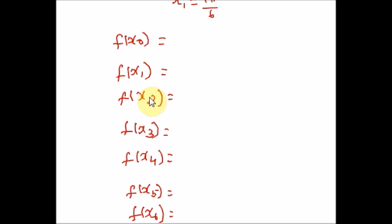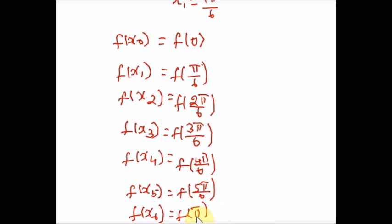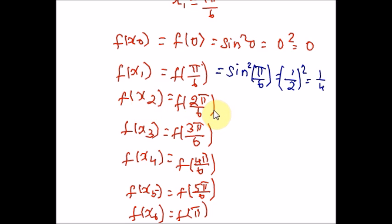We have to calculate the values from x₀ to x₆. We are going to plug in one by one and find the values for the function sin²x. Start with 0: sin²(0) = 0. f(x₁) is f(π/6): sin²(π/6) = (1/2)² = 1/4. f(x₂) is f(2π/6): sin²(π/3) = (√3/2)² = 3/4. If you look at the trigonometric ratios table, you can find all these values easily.